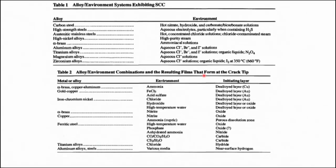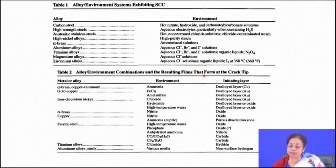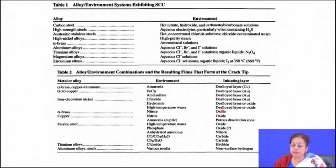In gold-copper systems with ferric chloride, there is a dealloyed layer. In iron-chromium-nickel based alloys in chloride, hydroxide, or high temperature water environments, there is a dealloying phenomenon. In alpha brass in nitrate or nitrite solution, there is oxide formation. In ferritic steel in high temperature water solution, there is oxide or nitrite formation. In titanium alloys, hydride and carbide formation occurs — these are porous, non-protective phases that increase local corrosiveness and initiate corrosion at a much faster rate.